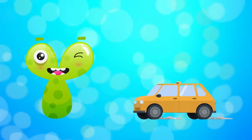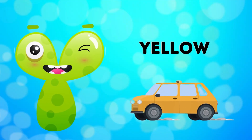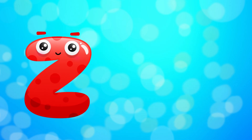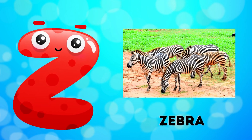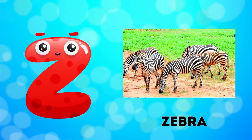Y is for yellow, y-y-yellow. Z is for zebra, z-z-zebra.